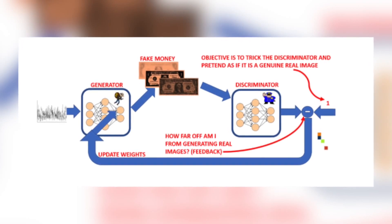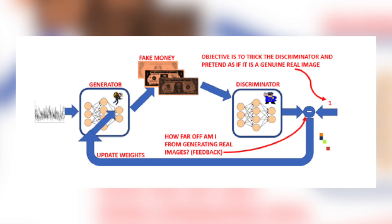The error, or loss, is propagated through the network to update the discriminator weights using back propagation. Note that the generator weights are not updated at this stage. For generator training, the generator generates fake images as usual. The fake images are fed to the discriminator, which classifies them as fake, or class zero. The discriminator output is then compared to ones — because the generator is trying to fool the discriminator into thinking it produced real images. The error represents the feedback answering: how far off am I from generating real images, and what should I do better? The generator weights are updated while the discriminator weights are frozen.